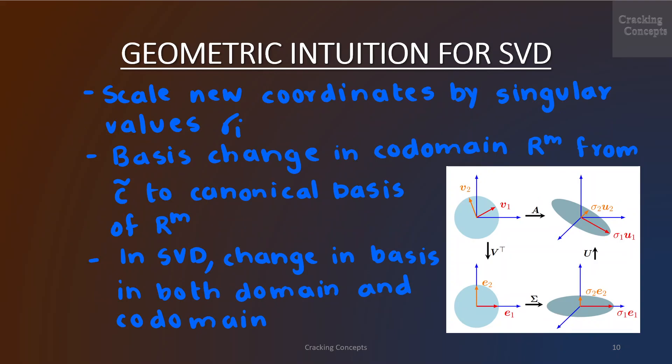Having changed the coordinate system to B tilde, Σ scales the new coordinates by the singular values σ_i and adds or deletes dimensions. Σ is the transformation matrix of φ with respect to B tilde and C tilde, represented by the red and orange vectors being stretched and lying in the e1-e2 plane which is now embedded in three dimensions in the bottom right.